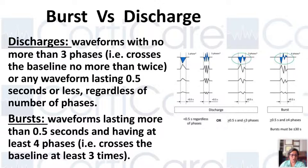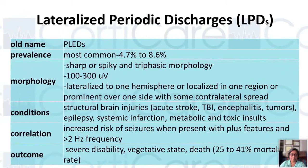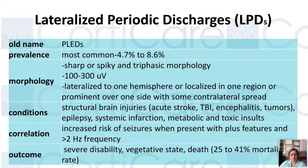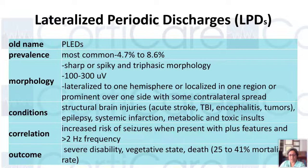LPDs — we still use the term PLEDs — appear in almost 10% of patients in the ICU. They are lateralized to one hemisphere and are highly correlated to seizures if their frequency increases above two hertz and if they are in association with plus features. The mortality rate is still relatively low; however, LPDs do cause severe disability and vegetative state in patients. Here are some EEG examples showing lateralized periodic discharges.